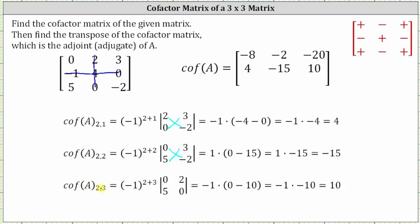Cofactor A sub two comma three is equal to negative one raised to the power of two plus three times the corresponding minor. If we eliminate row two, column three, we have a two by two determinant where row one is zero, two and row two is five, zero. The fifth power of negative one is negative one. The determinant is zero minus 10, or negative 10. Simplifying, we have positive 10, the entry for row two, column three.